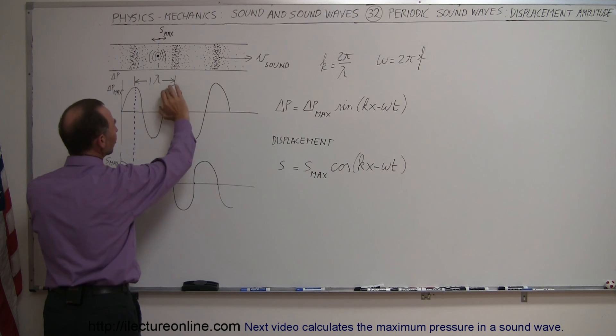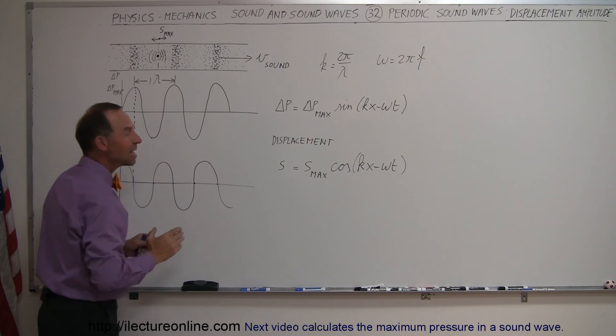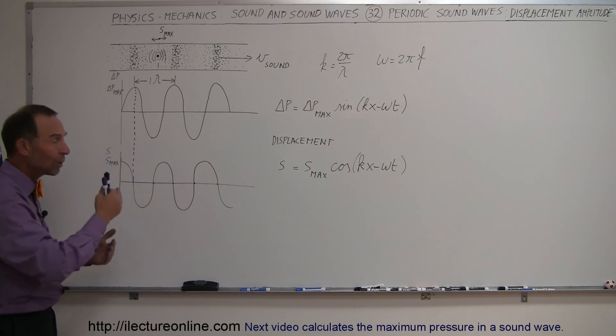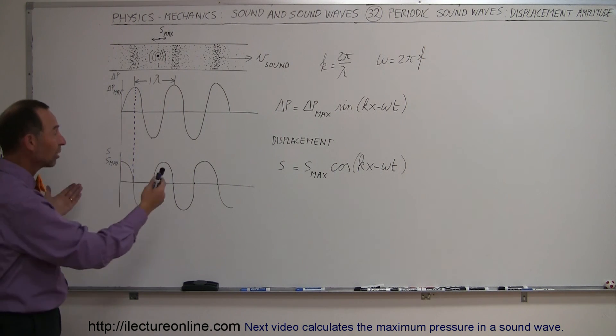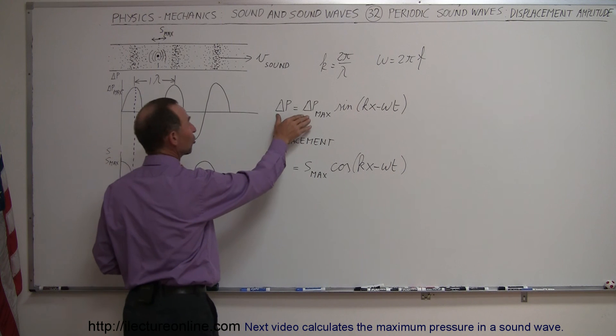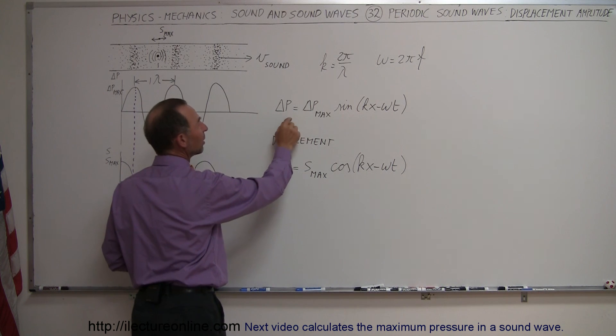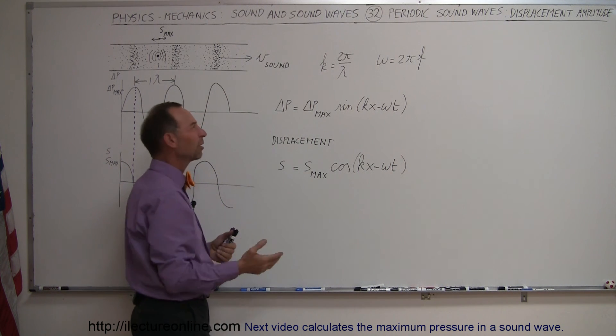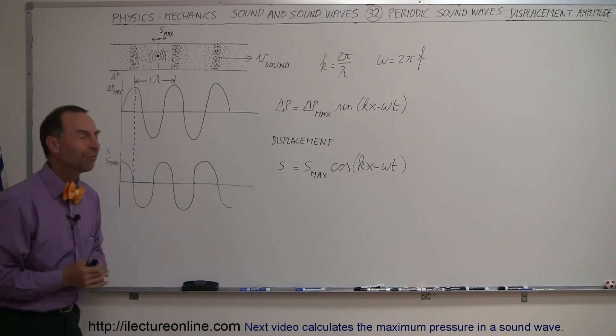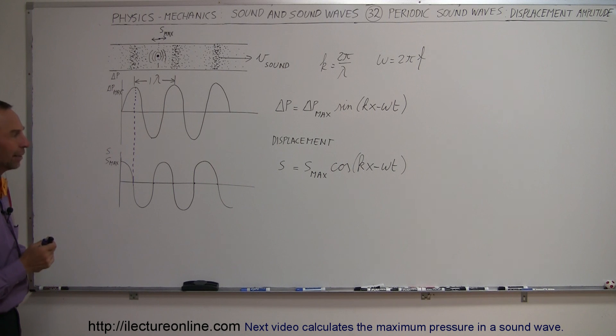It's just that the pressure increase lags the displacement increase by 90 degrees. And that's how the interplay between displacement of molecules and pressure takes place. And you can see then that we can define that as a sine and a cosine function. So this is called the pressure equation and that's called the displacement equation. And that's how we define the motion of sound in air.